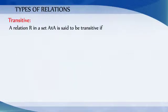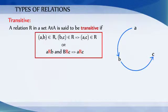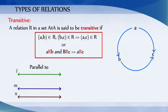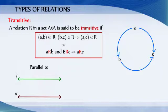Transitive relation: A relation R in a set A cross A is said to be transitive if a relates to b and b relates to c should imply a relates to c. For example, if line L is parallel to M and M is parallel to N, then L is parallel to N. So we can say the relation parallel to is transitive.